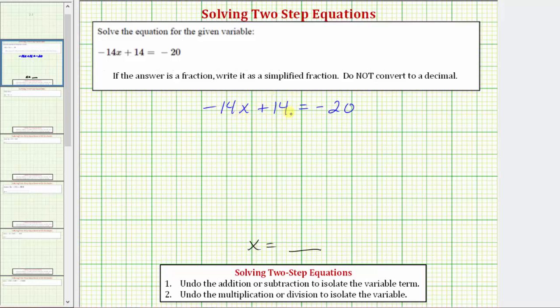This is called a two-step equation. Whenever we have a two-step equation, the first step is always to undo the addition or subtraction in order to isolate the variable term. The second step is to undo the multiplication or division in order to isolate the variable.